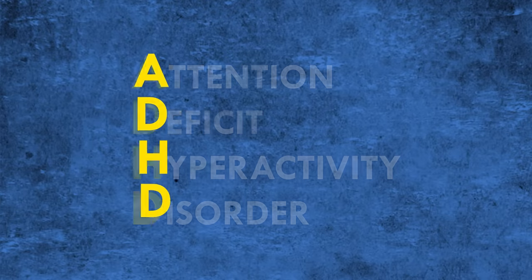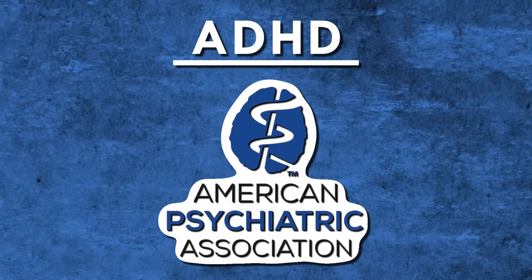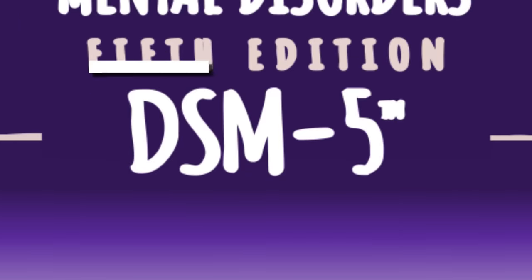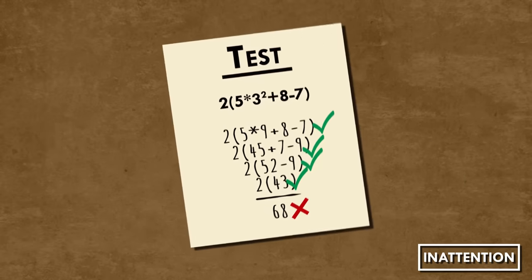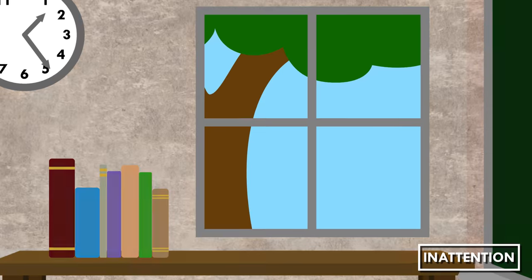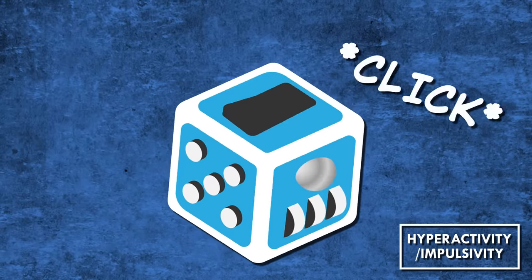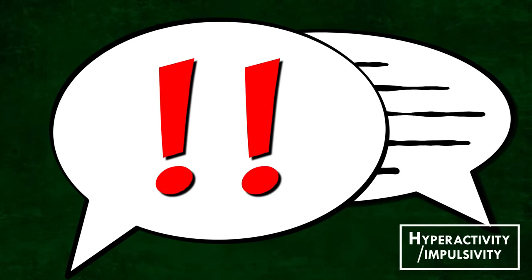Attention Deficit Hyperactivity Disorder, or ADHD, is a neurodevelopmental disorder as defined by the American Psychiatric Association in the Diagnostic and Statistical Manual, or DSM. ADHD is currently diagnosed in both children and adults based on the symptoms of inattention and hyperactivity or impulsivity. Two of several signs of inattention include making careless mistakes or having difficulty focusing. A few of the many signs of hyperactivity and impulsivity include fidgeting or restlessness, trouble sitting still, or interrupting and blurting out answers.